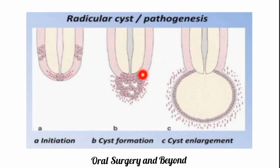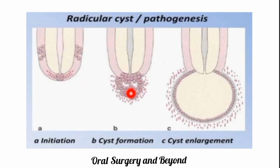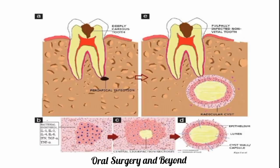The pathogenesis of the radicular cyst: it is most commonly associated with a chronically infected, decayed, or non-vital tooth. When infection reaches the periapical region via the pulpal canal, there is initiation of cyst formation and proliferation of the cell rests of Malassez. The infectious fluid becomes encapsulated, accumulates inside the epithelial lining, and forms the lumen, resulting in the periapical cyst.